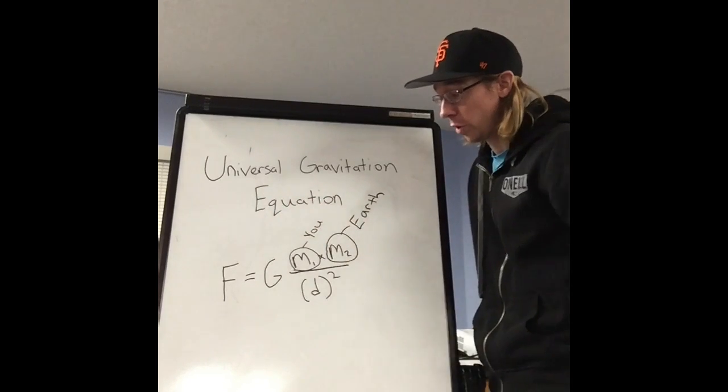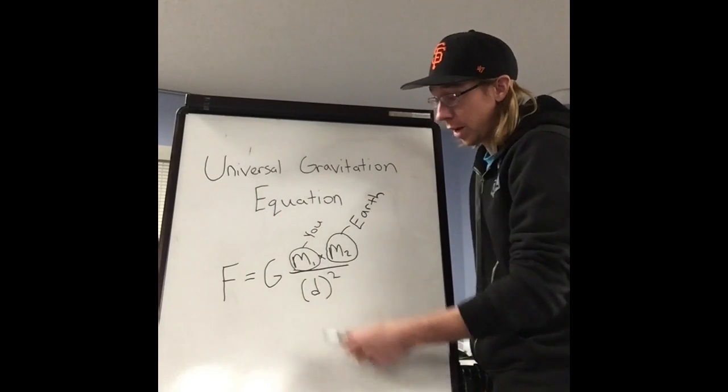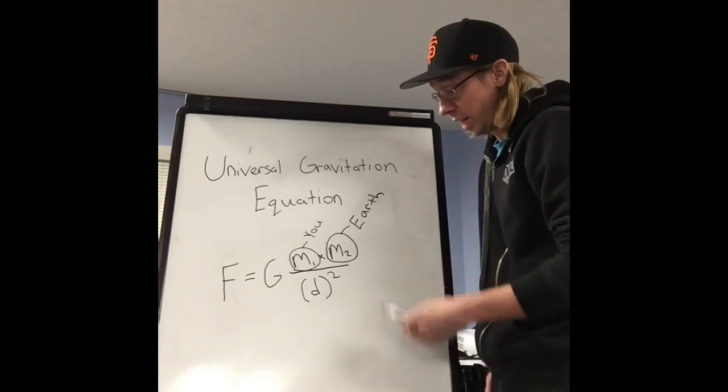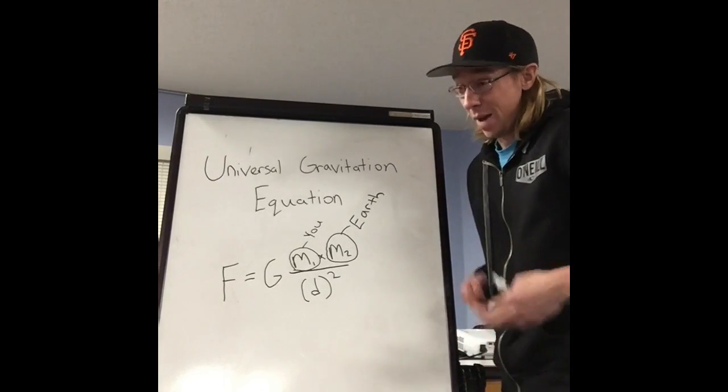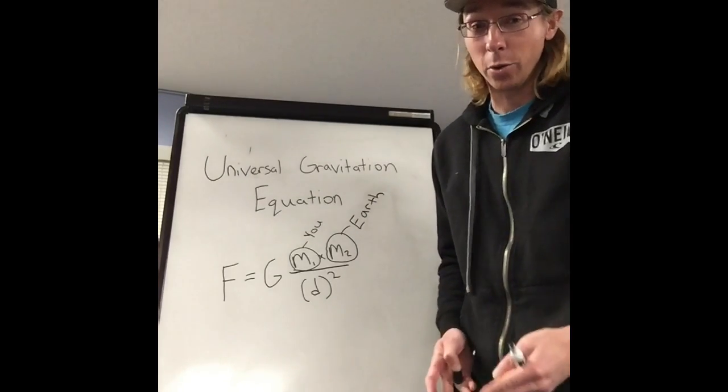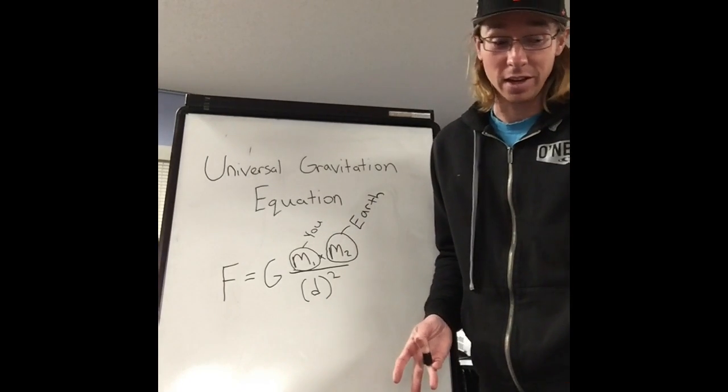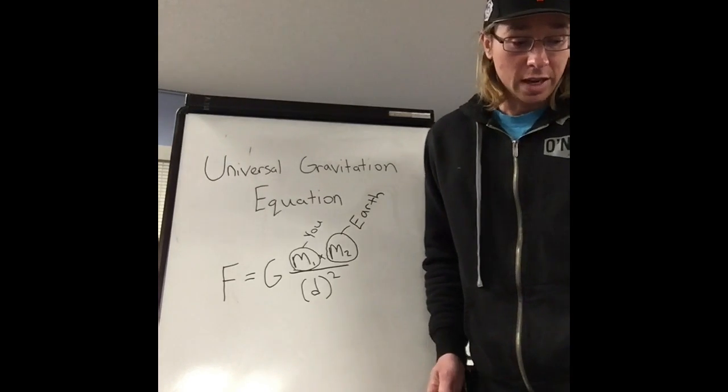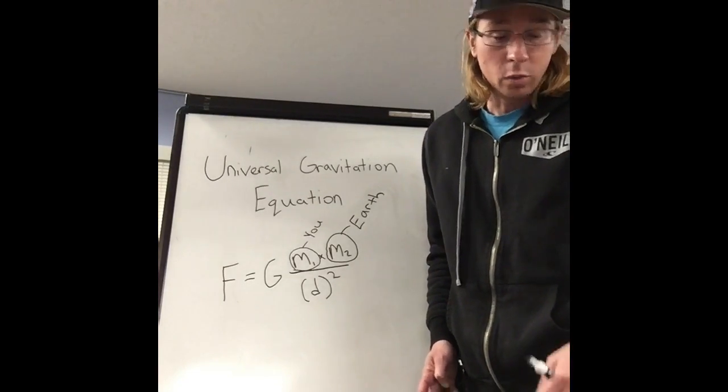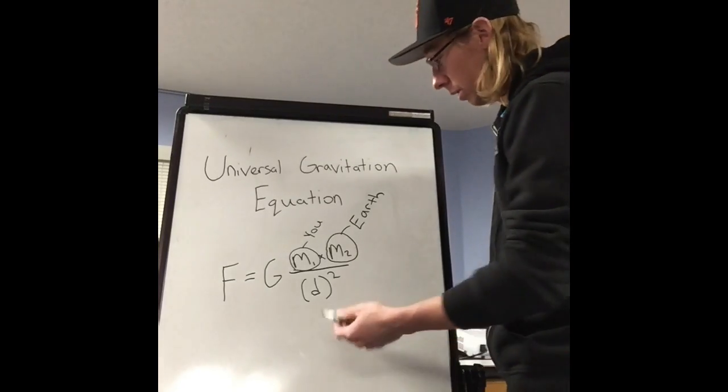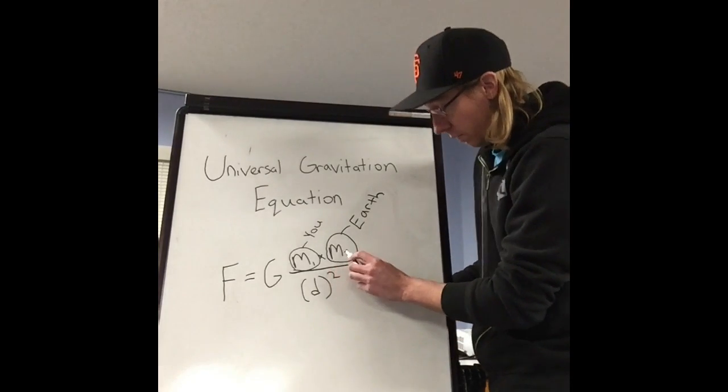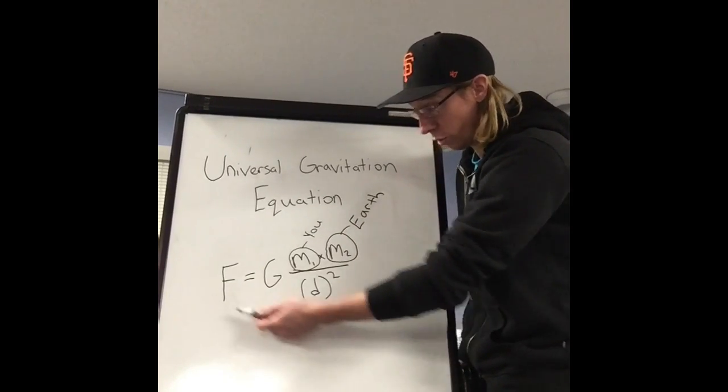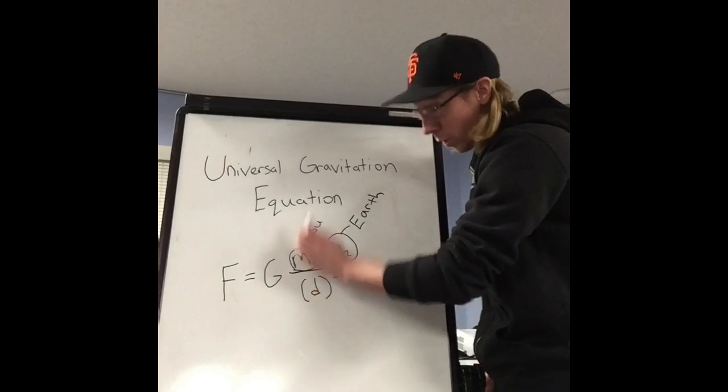So here it is. This is Newton's universal gravitation equation, and it's used to calculate the force of gravity and to explain how massive an object needs to be in order to actually feel gravity. The equation is also saying that the gravitational force increases as one or more masses increase. You can see here if this mass went up and up and up, well, of course the gravitational force would increase.